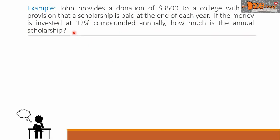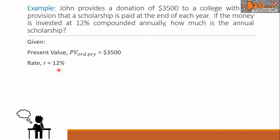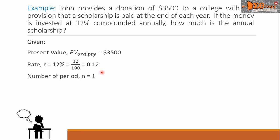Let us first write the given values of the problem. The present value PV is $3,500. The rate R is 12%. Let us convert this to decimal by dropping the percent sign and dividing 12 by 100, giving us 0.12. Next, the number of periods — it says compounded annually, so N equals 1.